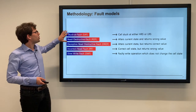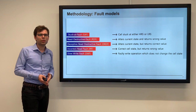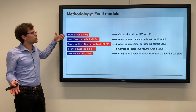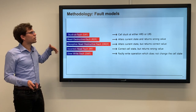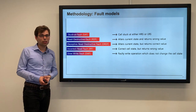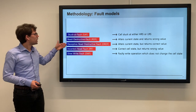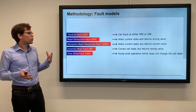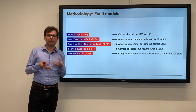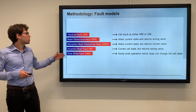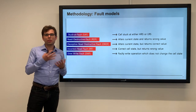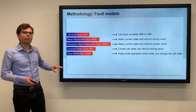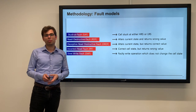These are the different faults we model inside the crossbar — five fault models in total. A stuck-at fault where a cell is stuck at a certain high or low resistor value. A read-destructive fault where the state is altered during a read operation to give a false result. A deceptive read-destructive fault which also alters the state but is not visible. An incorrect read fault where the correct state is inside the cell but you see the wrong value. And a slow-write fault where the value is not changed inside the cell in the appropriate amount of time.